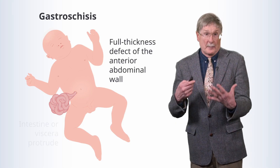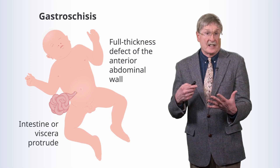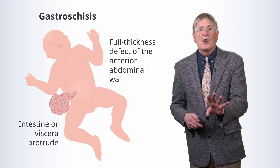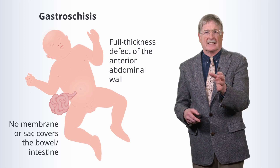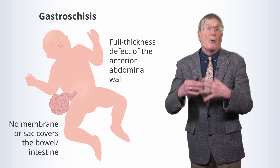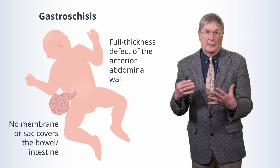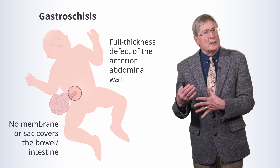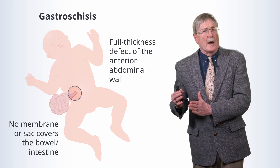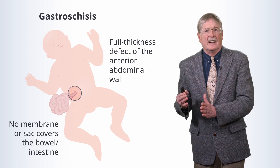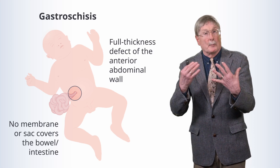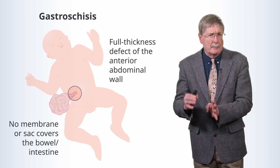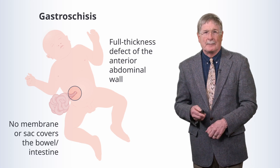The intestines, or some of the viscera such as liver, will protrude outside, but there will be no membrane or sac covering this. This is to be distinguished from omphalocele, which we're going to talk about next. The defect is often just to the right of the umbilical insertion site.